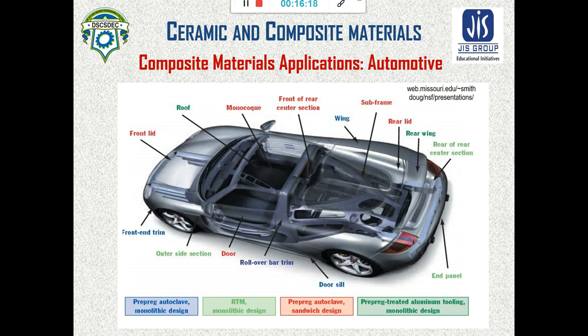In this image, you can see the parts that can be made by composite structure in a general automobile: the frame, subframe, front and rear center section, roof, front lid, front end rim, outer side section, door, rollover bar trim, door seal, end panel, rear center section, rear wing, rear lid, subframe, and wings.